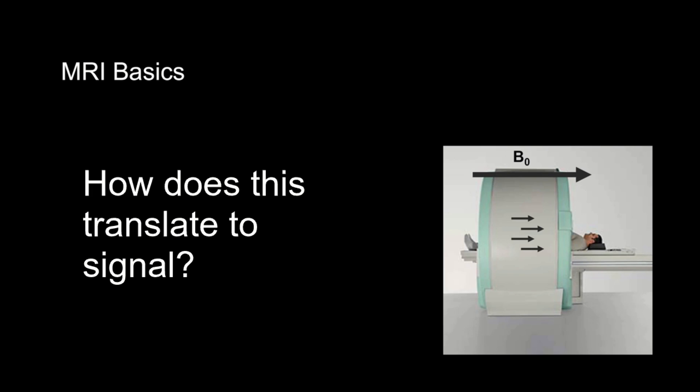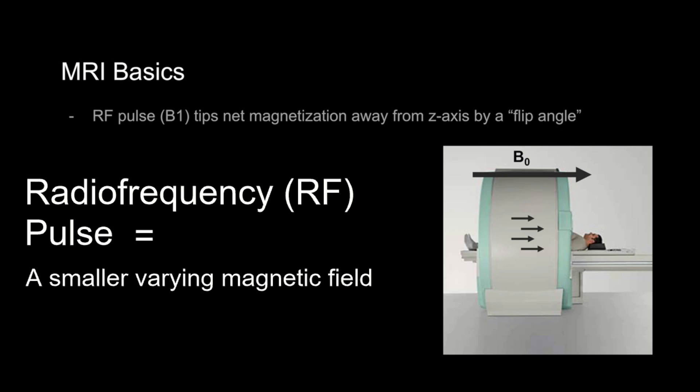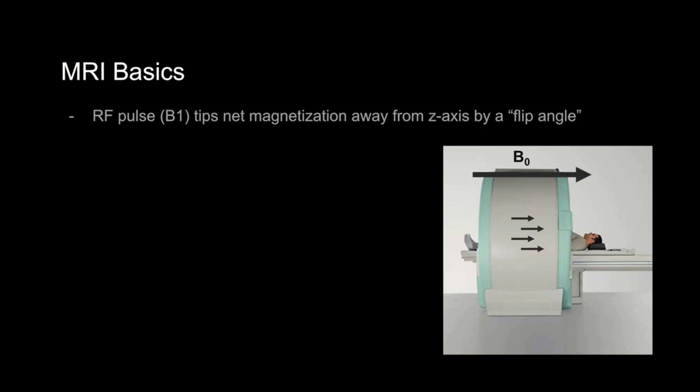So, how do we translate this into MRI signal? Next, we apply something called a radio frequency pulse, or RF pulse, that is designed to tip the net magnetization away from the z-axis. The RF pulse is essentially a smaller, varying magnetic field applied at a specific frequency in a direction that is perpendicular to the main magnetic field. It's not really a radio wave, but instead it's electromagnetic energy with a frequency that is in the radio wave spectrum.